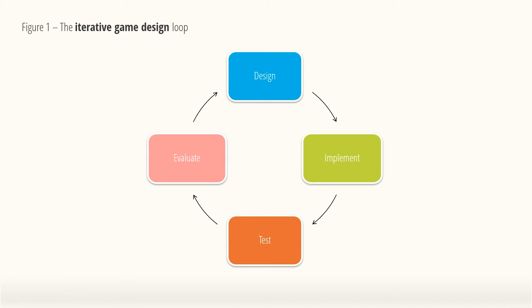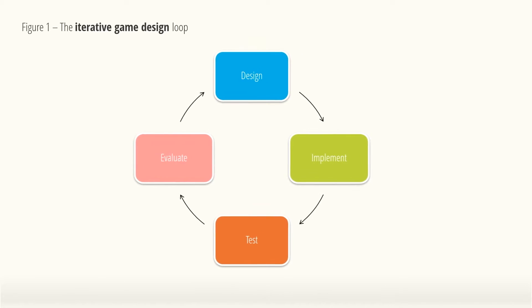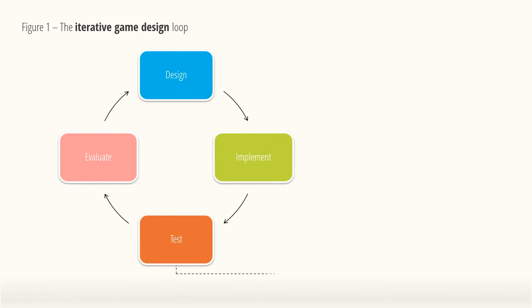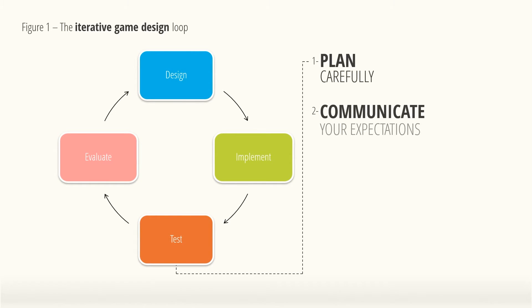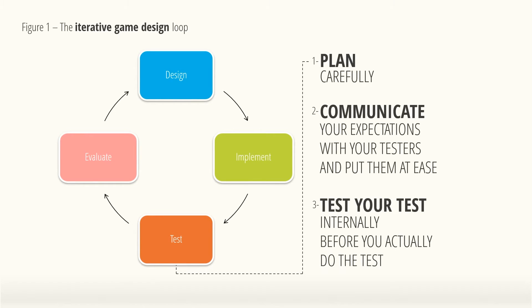Typically, you want your design to fail fast and fail often, so you can get to a better design as quickly as possible. Which means you'll want to look up some information on playtesting — I'll provide links in the description for further reading. My most important playtesting tips: plan it carefully, communicate clearly what you want your testers to do, and test your test before you test. So that was the world's shortest game design primer.